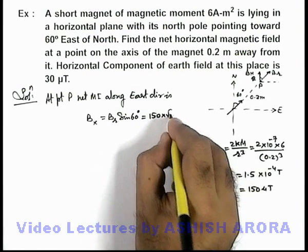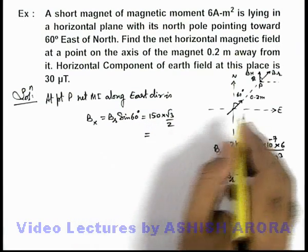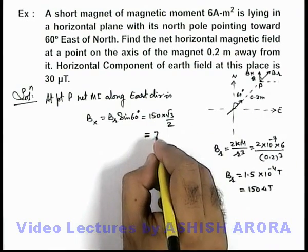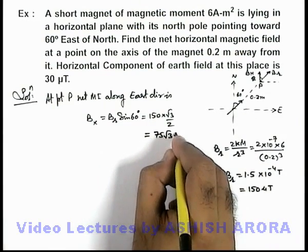So this will be 150 sin 60° which is √3/2. So we are getting the value of magnetic field in the east direction is 75√3 micro tesla.